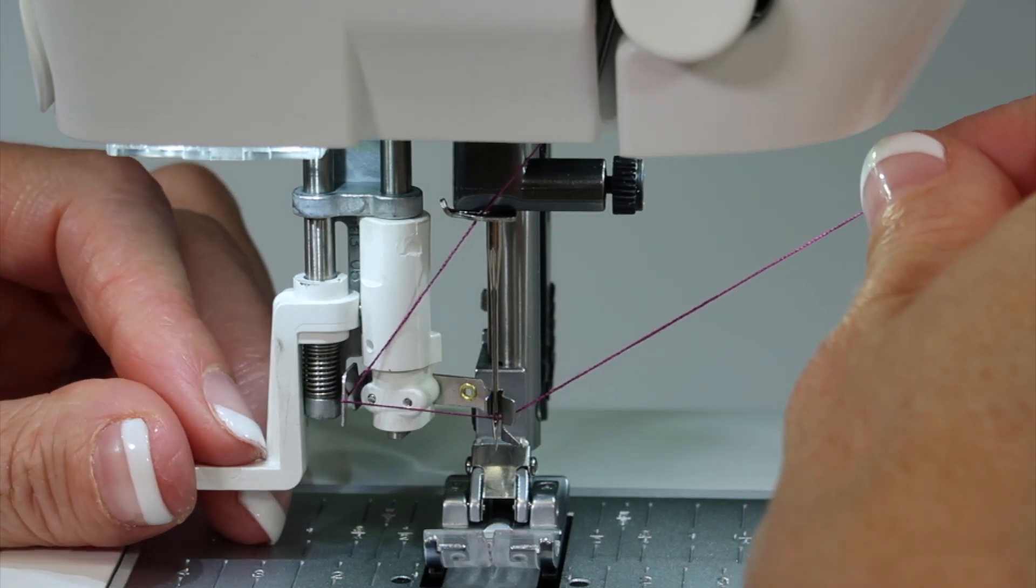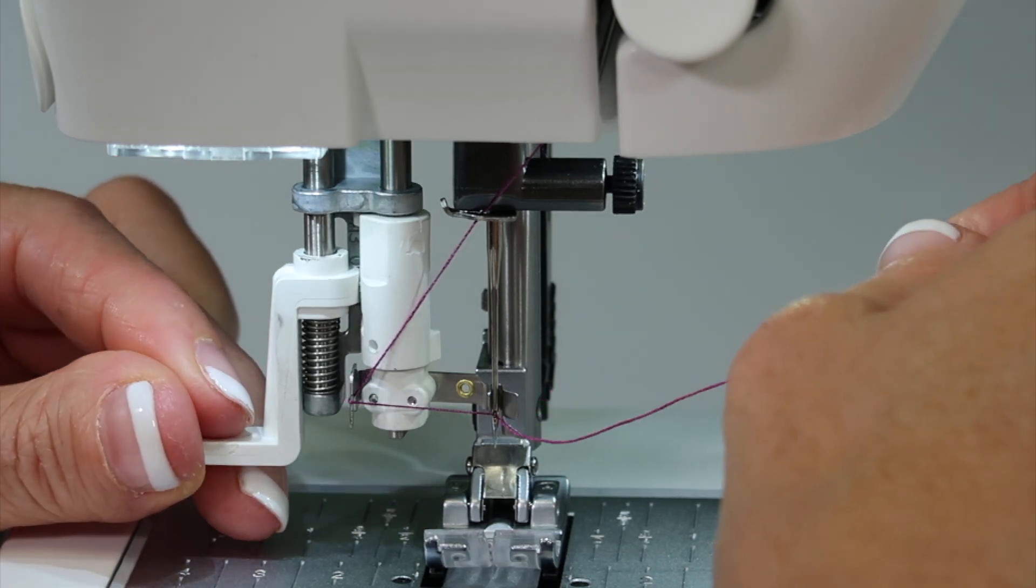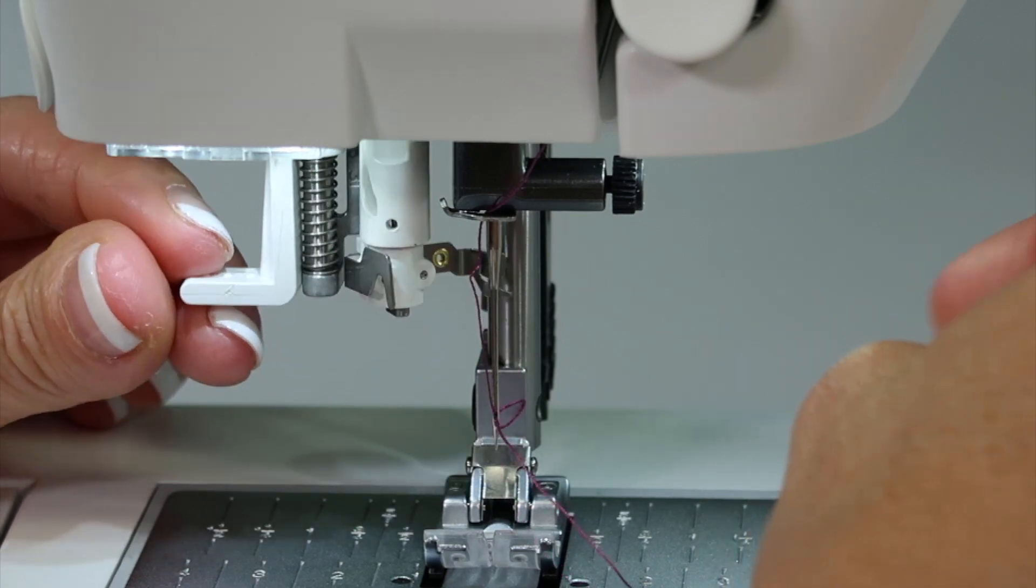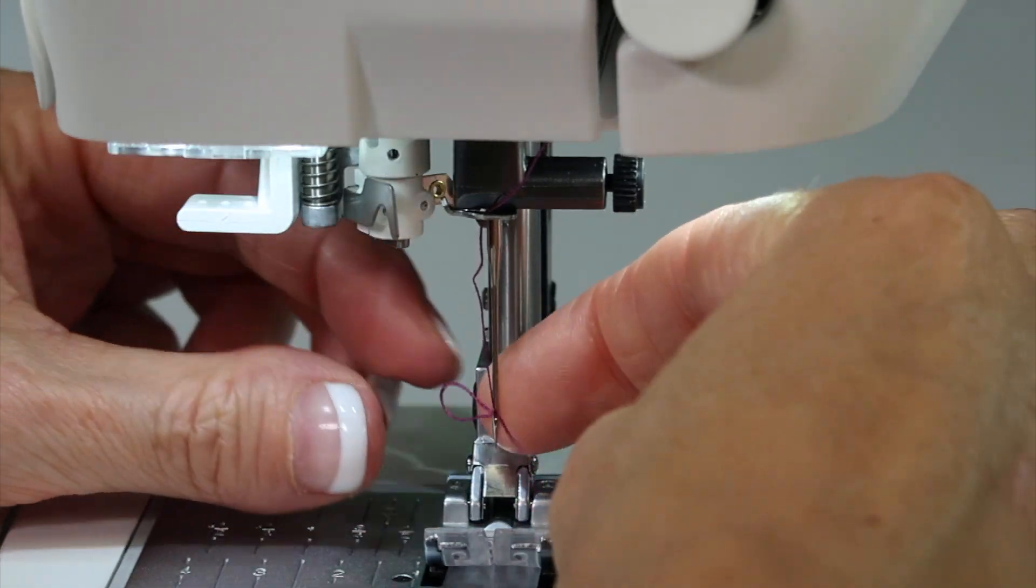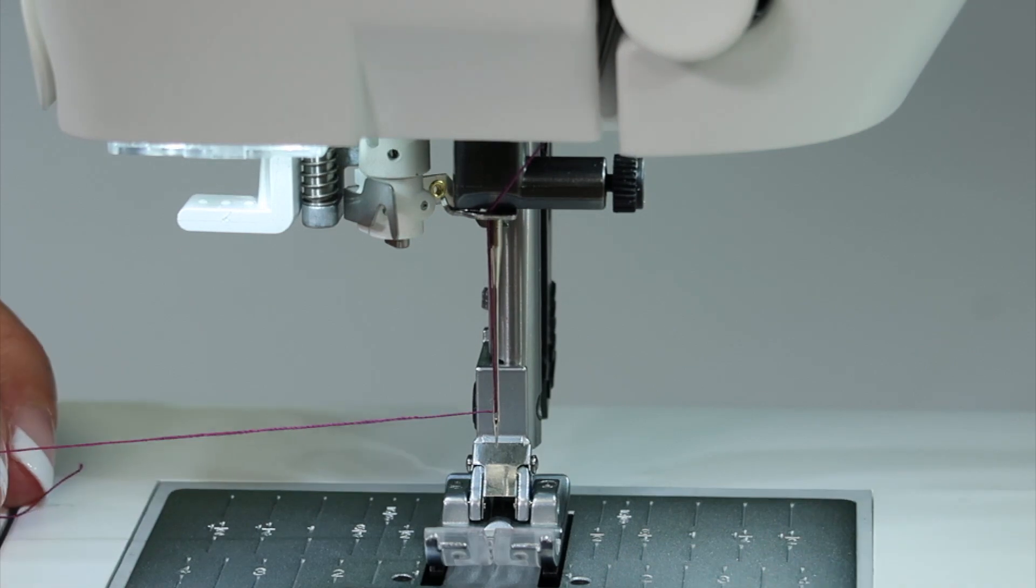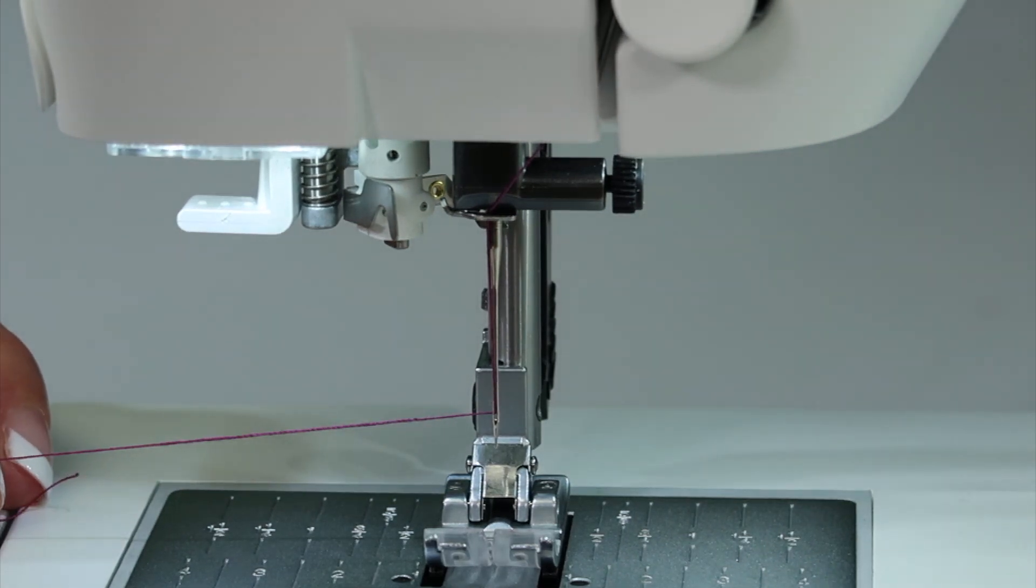The little hook will then take hold of the thread, and as you gently release the needle threader and release the thread over here, it will pull a small loop through the needle eye. Then all you need to do is start to sew.